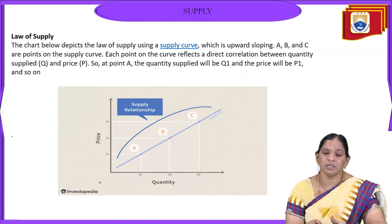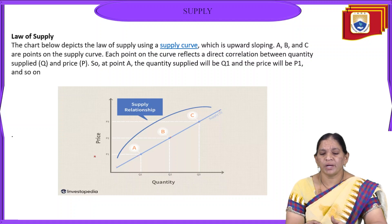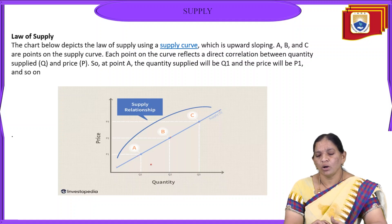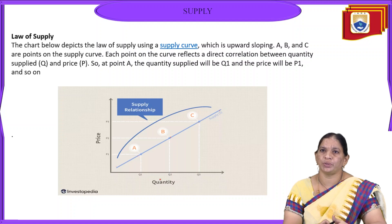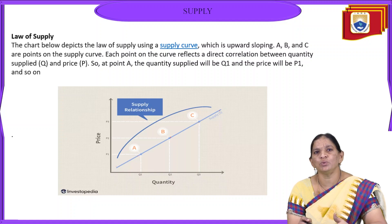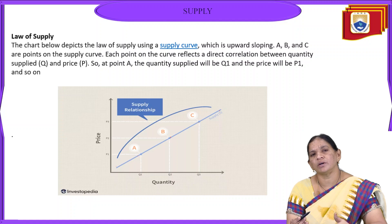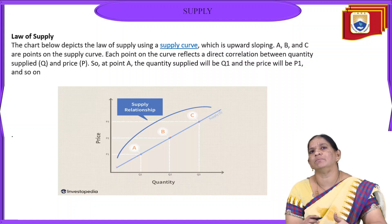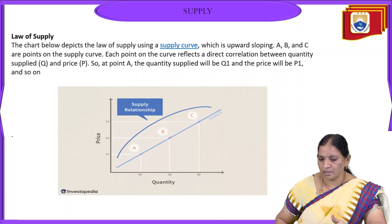Similarly, when the price increases from P2 to P3, the quantity also increases from Q2 to Q3. In this way, the supply curve slopes upwards, showing a positive relationship — once the price of goods increases, the quantity supplied will also increase.